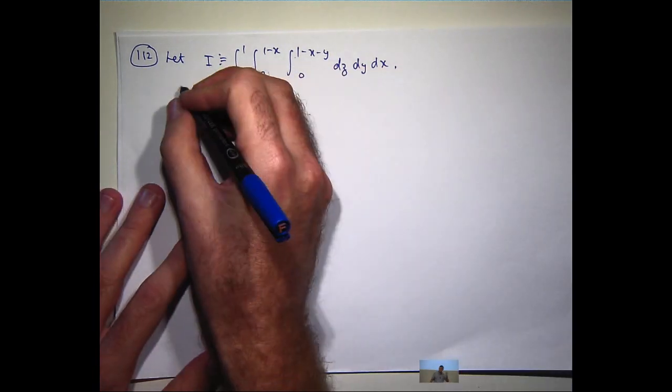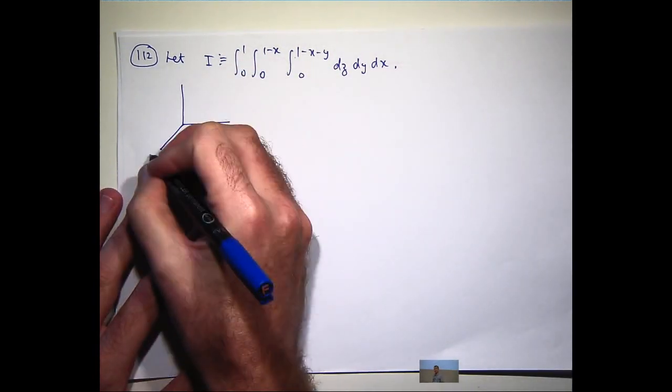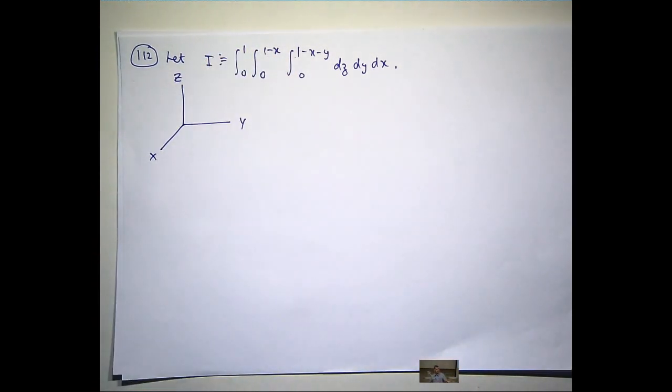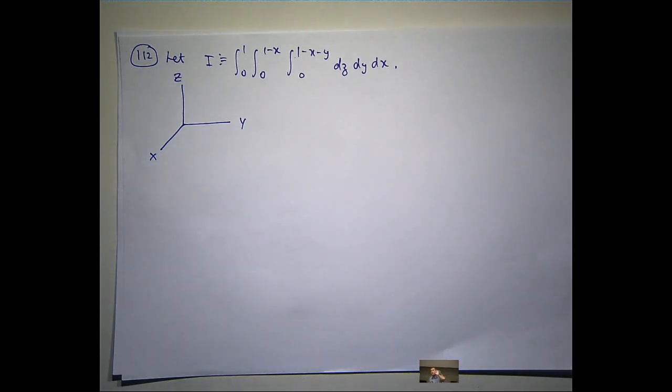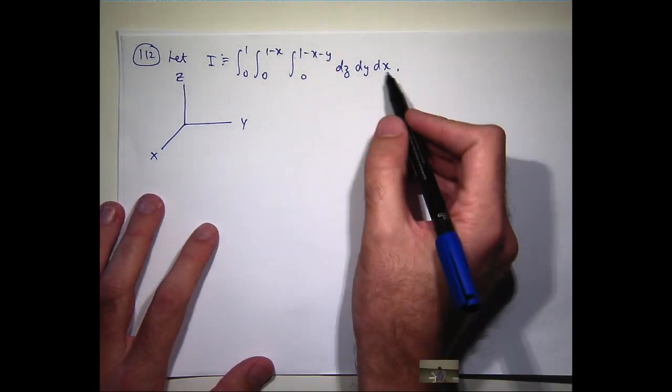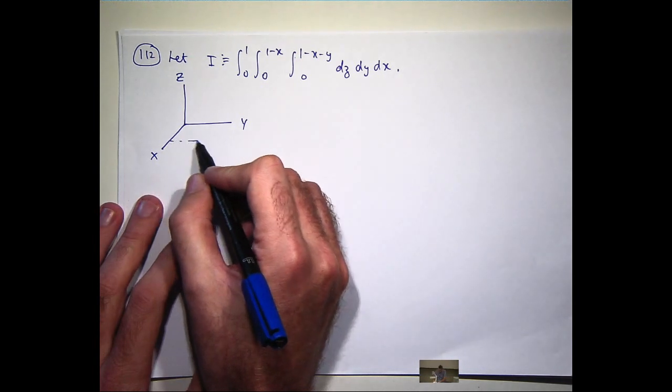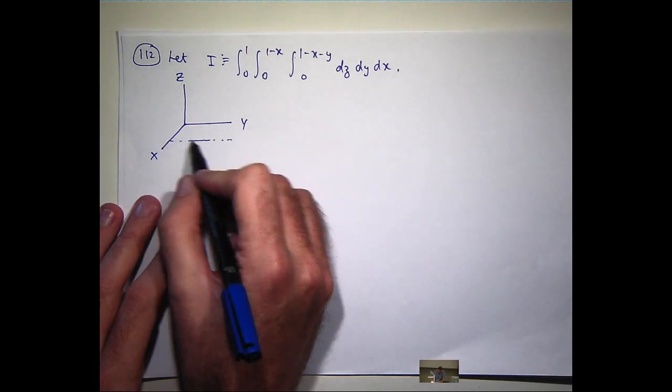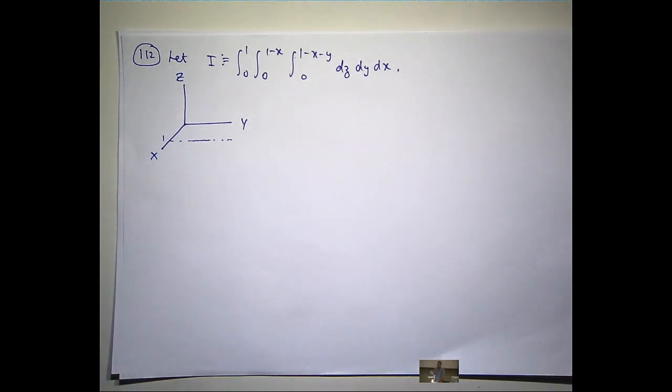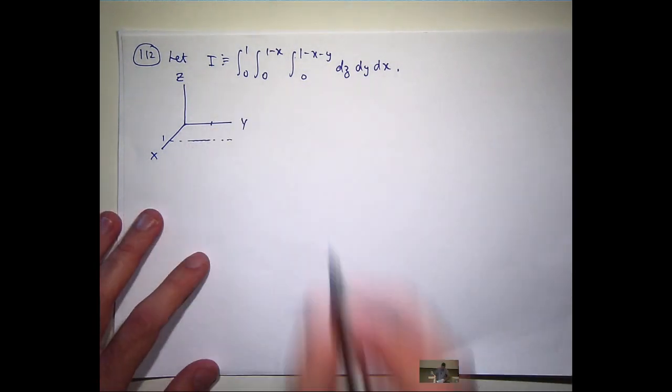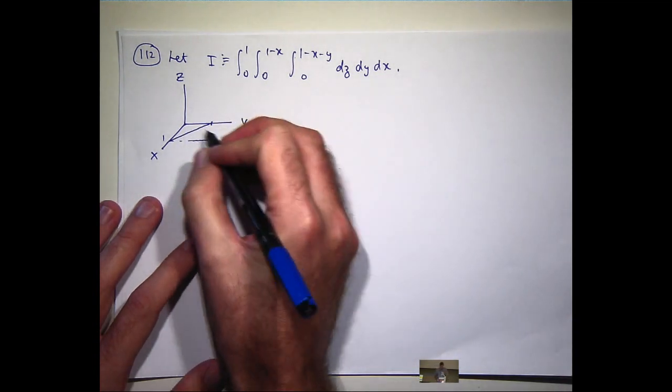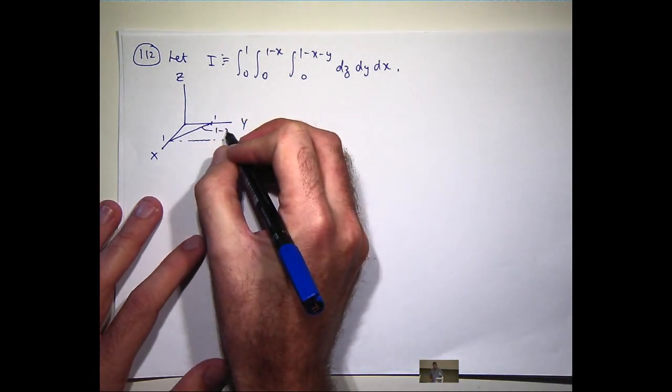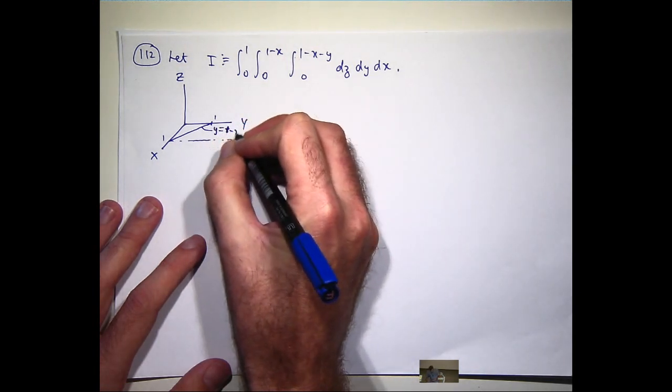So, okay, so here are my axes. Now, x is between 0 and 1, so let's mark the line x equals 0 and the line x equals 1 here. Now, y is between 0 and 1 minus x. If I sketch that in the x, y plane, I'll get something like that.